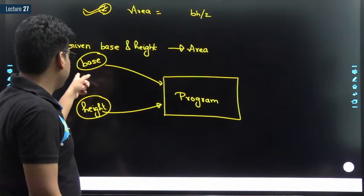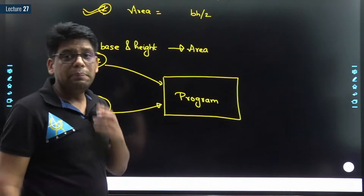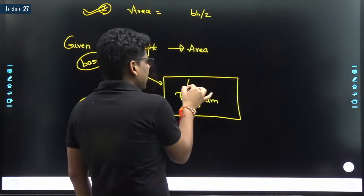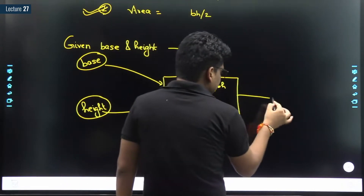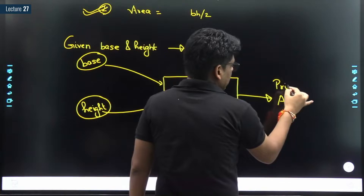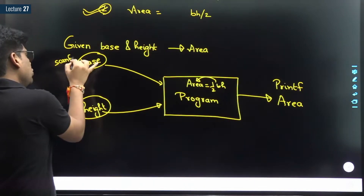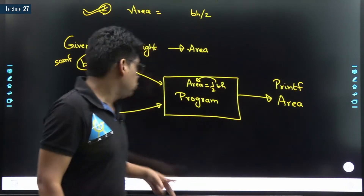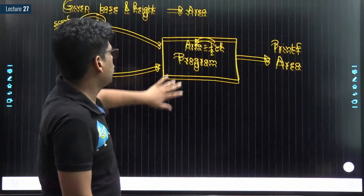It is not necessary that the variable name must be 'base', but it is good practice to use meaningful names. Our program will do a calculation like 1/2 × b × h, and once the area is calculated it needs to be printed. We will scan two values using scanf, do the calculation, and produce the output. How many variables do we need? We need to store base, height, and area - three variables.